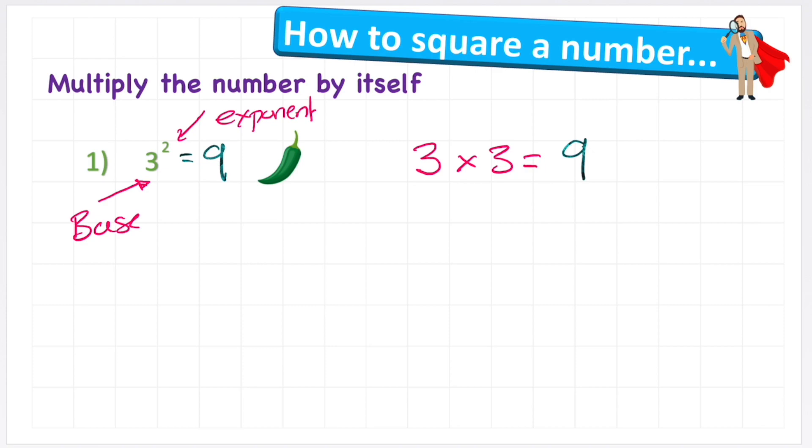But I want to show you what this actually means and why it's called squared. So I want to build a square here with a width of 3 and a length of 3. Now if I get my square and cut it into its widths and length,